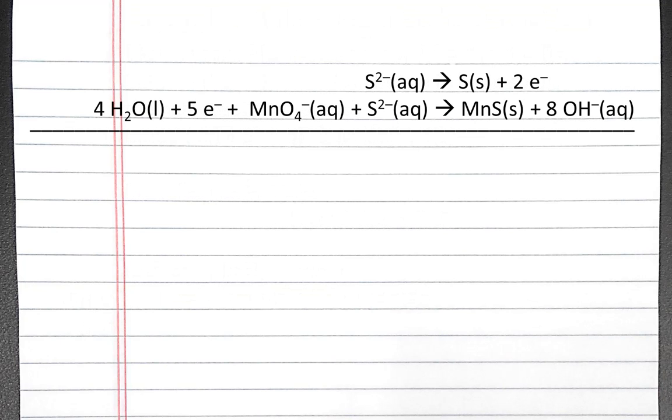Now that we've balanced our oxidation and reduction half-reactions, we need to add them together in such a way that the electrons will cancel each other out on both sides. To do this, we'll have to multiply our oxidation half-reaction by 5 and our reduction half-reaction by 2, so that there will be 10 electrons in both the oxidation and reduction half-reactions.